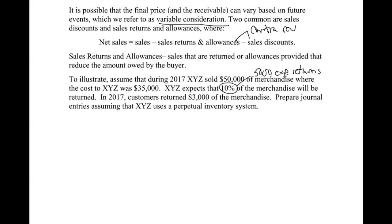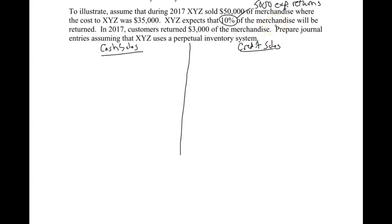We're going to break our page up and assume cash sales on this side and credit sales on the other side. They're almost identical except for a few entries. First, I'm going to record the sale. On the cash sales side, this would just be cash and sales revenue for the $50,000.